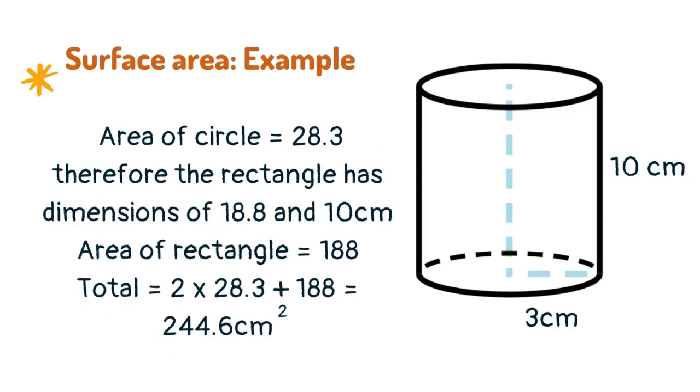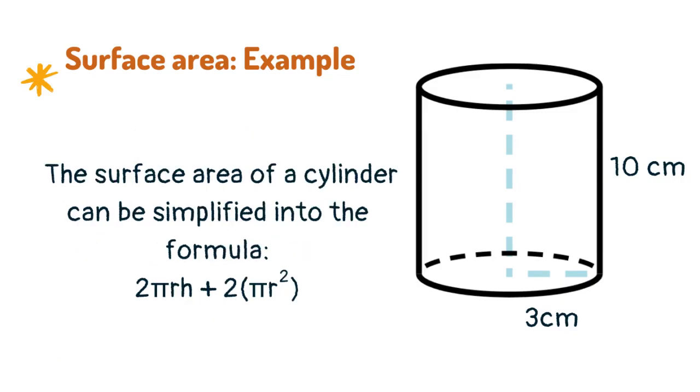Find the area of the circle and times by 2 as there are 2 circles, 1 at each end and add on the area of the rectangle. The surface area of a cylinder can be simplified into the formula 2πrh plus 2πr squared.